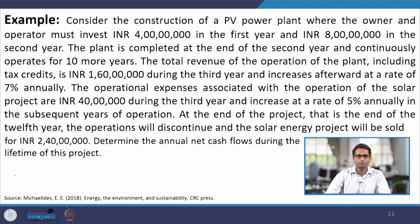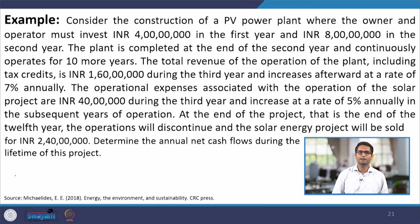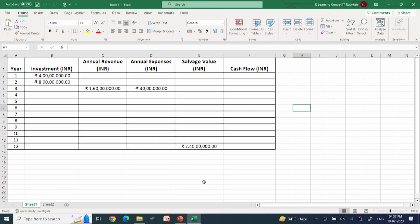Given these cash flows, how will the total net cash flows for the project look? We'll do this calculation with the help of MS Excel, which is a common tool most of you would have access to, or you could use similar spreadsheet software. Let me now go to MS Excel and share how this calculation would appear. I have already prepared a typical Excel sheet for our convenience. As stated in the problem, in the first year there is an expense of 4 crores.